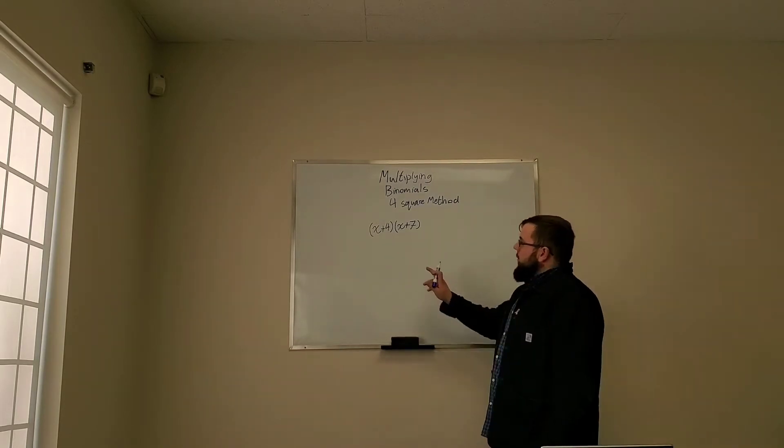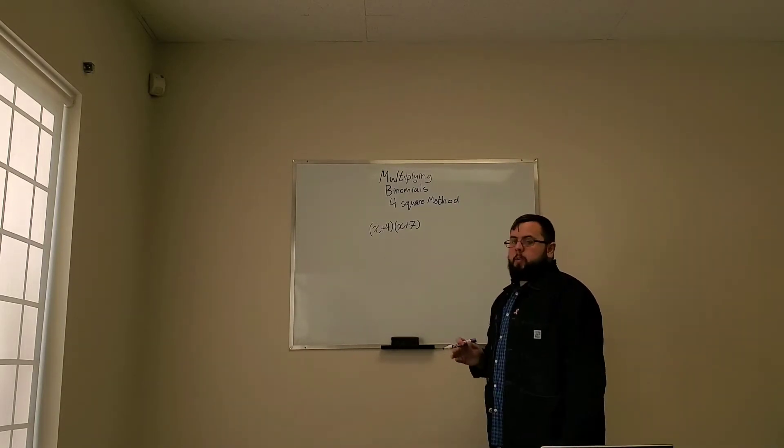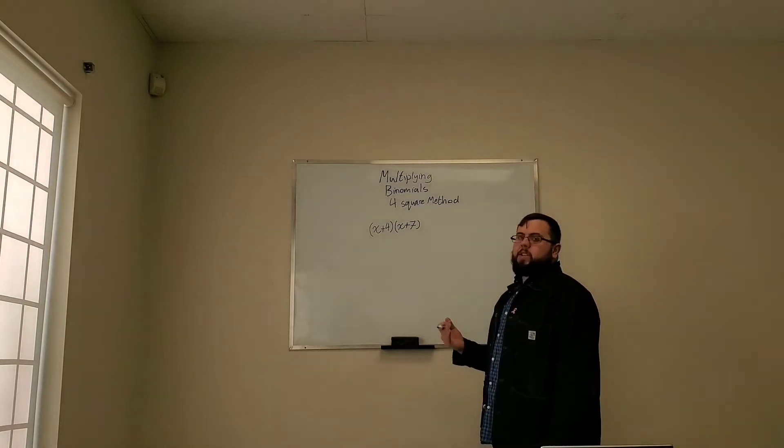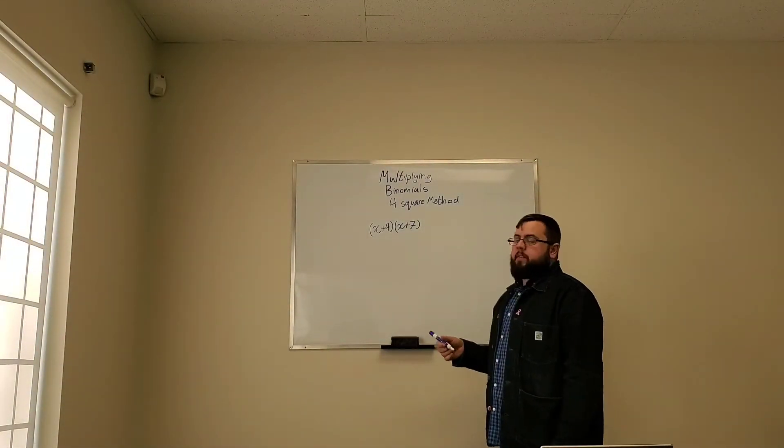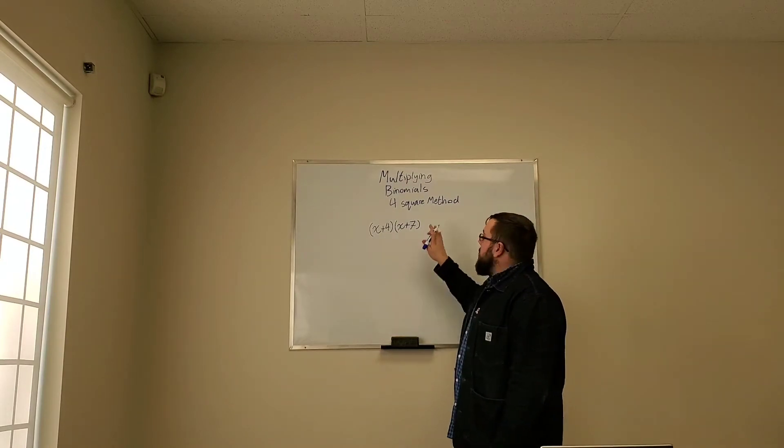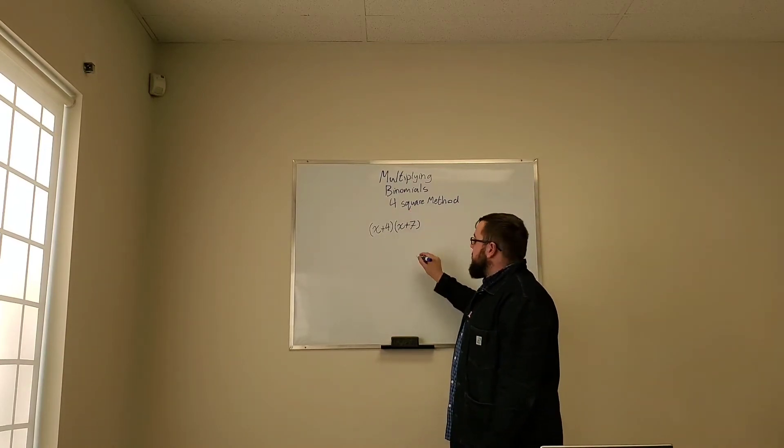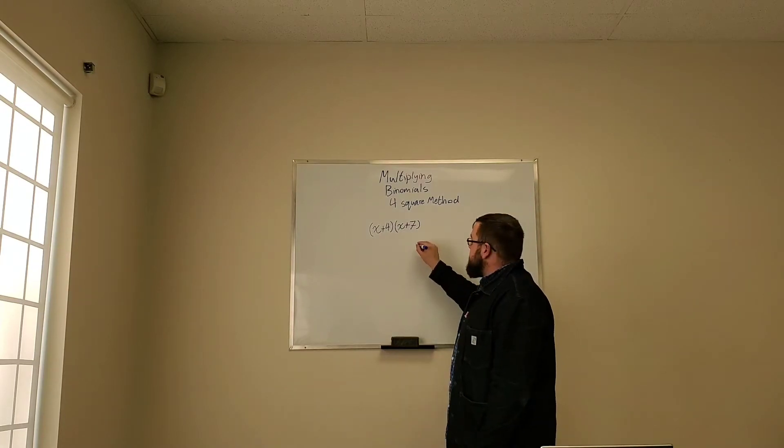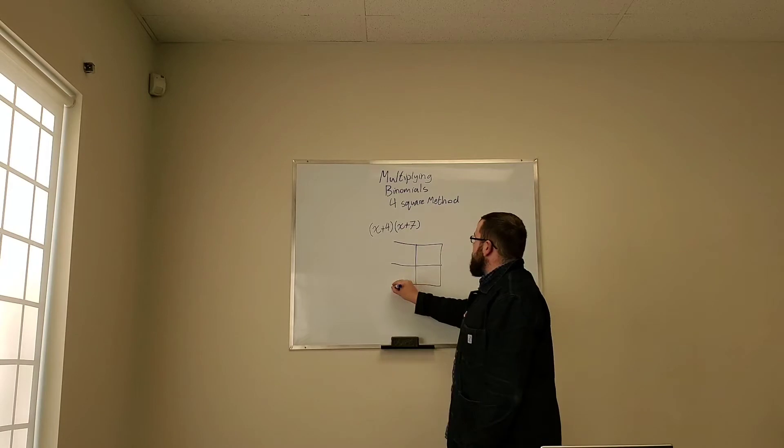Okay, so we have a binomial just like we had in our previous example, right? This time we have x plus four times x plus seven. So instead of breaking it all apart, we're going to use the four-square method.